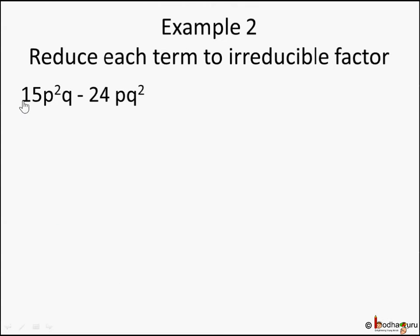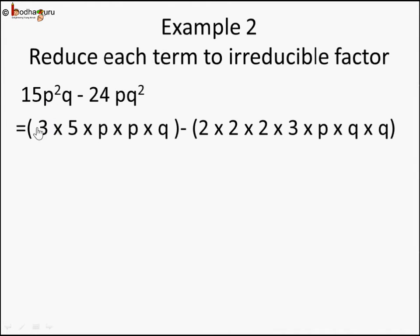Let's take another example — a little bigger one: 15p²q minus 24pq². The square is with p in the first term and with q in the second term. First step: let's take each term and break it into its irreducible form — constants as prime factors and each variable individually. 15 is 3 into 5, and p² is p into p. So 15p²q becomes (3 into 5 into p into p into q). And 24, its prime factorization is 2 into 2 into 2 into 3, so 24pq² becomes (2 into 2 into 2 into 3 into p into q into q).